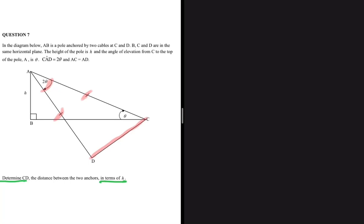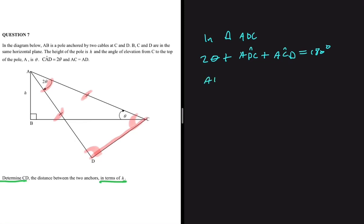Since AC and AD are equal, this angle should equal that angle. In triangle ADC, we have 2θ plus angle ADC plus angle ACD being equal to 180 degrees. Because ADC and ACD are equal to each other — since the sides are equal — we can say ADC equals ACD.